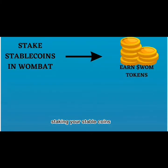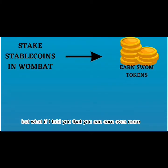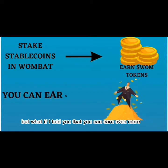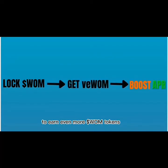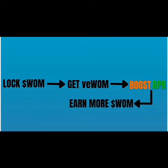Staking your stablecoins is a great way to earn Womb tokens. But by locking your Womb tokens, you can turn them into VE Womb tokens and boost your APR exponentially to earn even more Womb tokens.